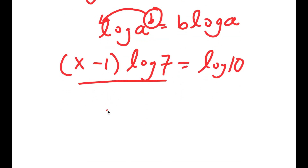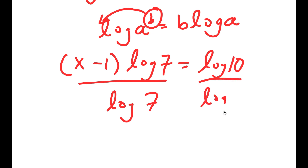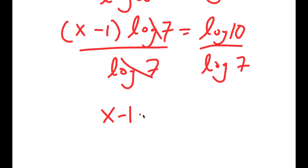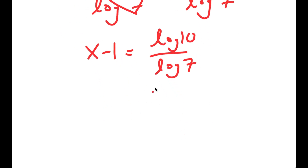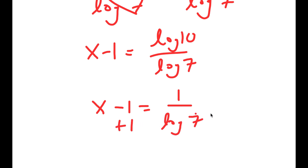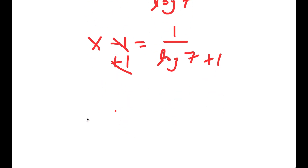Now we want to isolate x, so I'm going to divide both sides by log 7. These two cancel out, and I get x minus 1 is equal to log 10 over log 7. Now log 10 is the same thing as 1, so I have x minus 1 is equal to 1 over log 7. And now I can add 1 on both sides, so I get x is equal to 1 over log 7 plus 1.